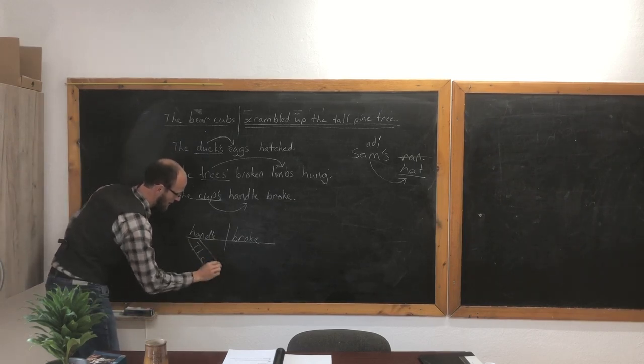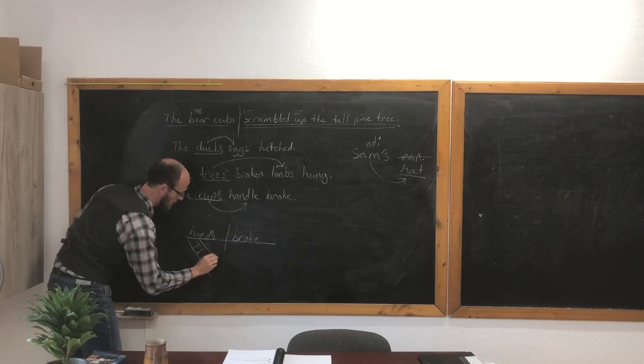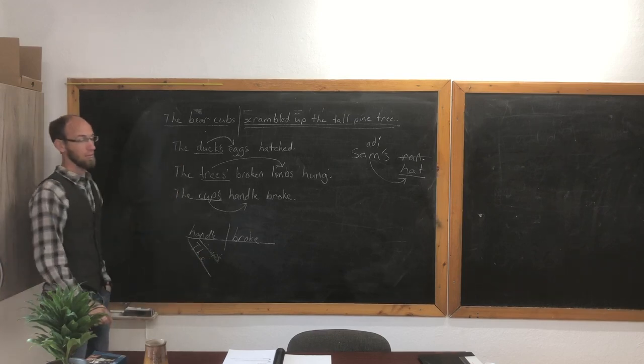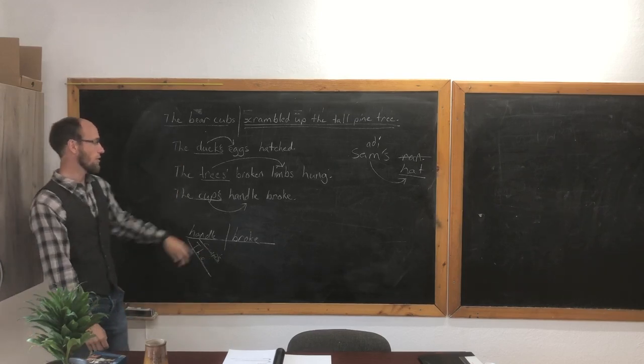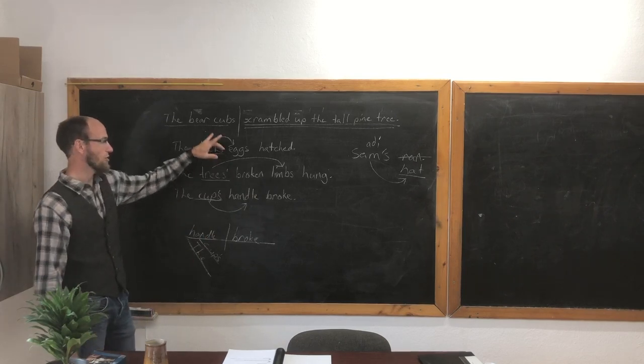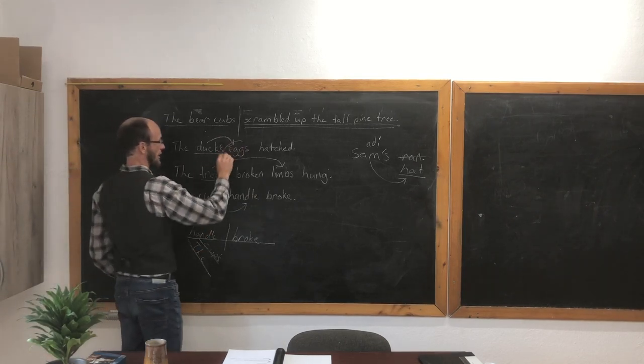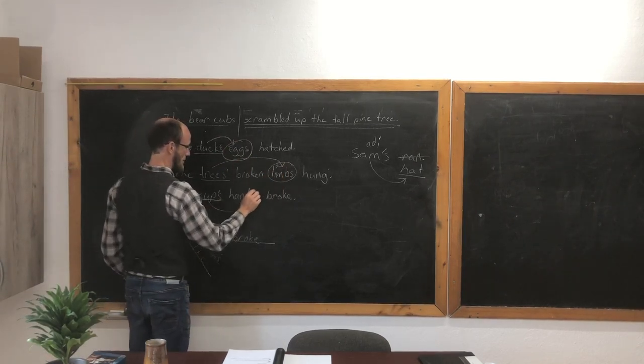The cup's handle broke. So be very careful when you go to find subjects. Let's circle the subjects in these words. Subject: eggs. Subject: limbs. Subject: handle.